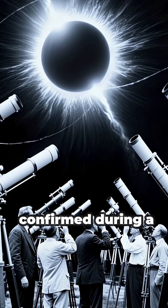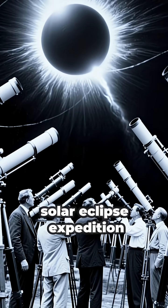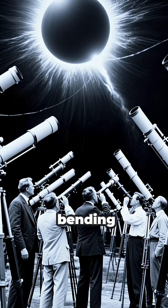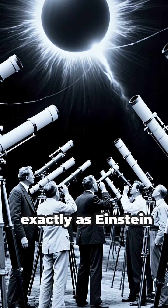This theory was confirmed during a 1919 solar eclipse expedition, which observed light bending around the sun exactly as Einstein predicted.